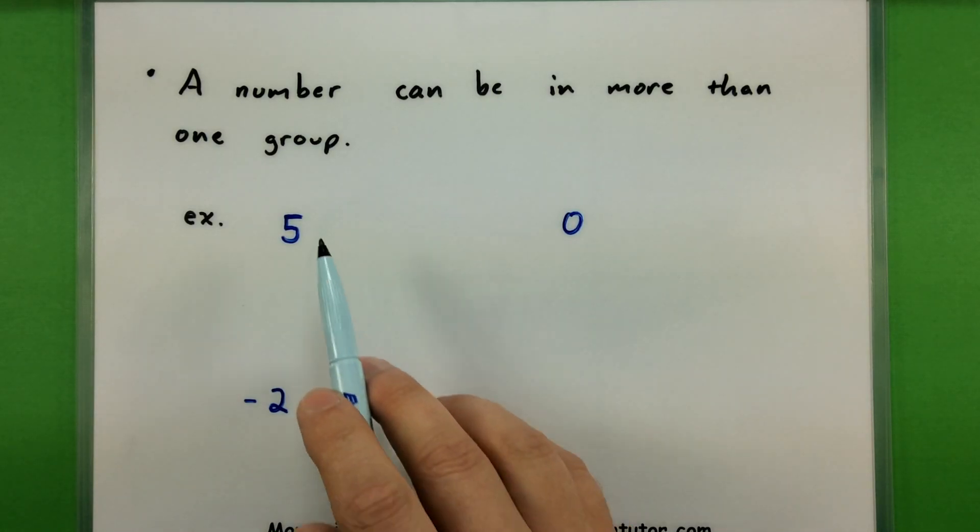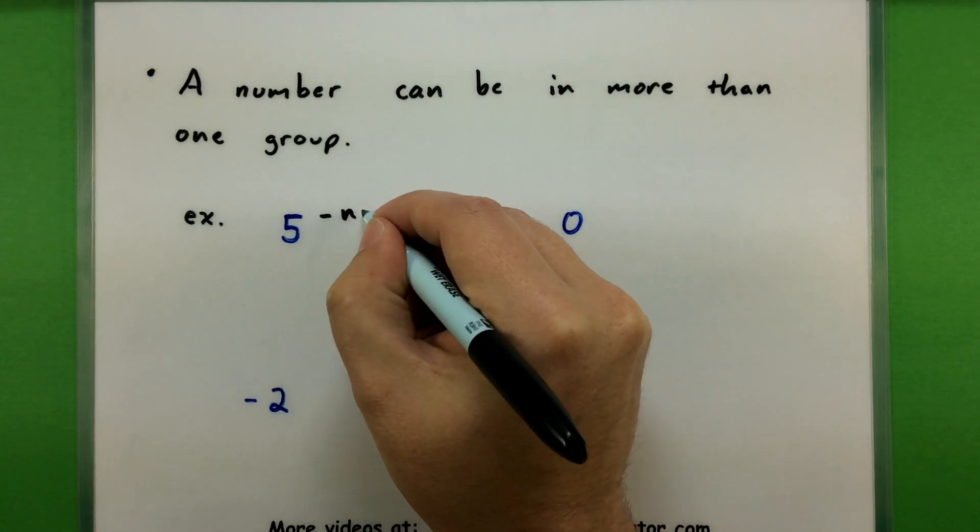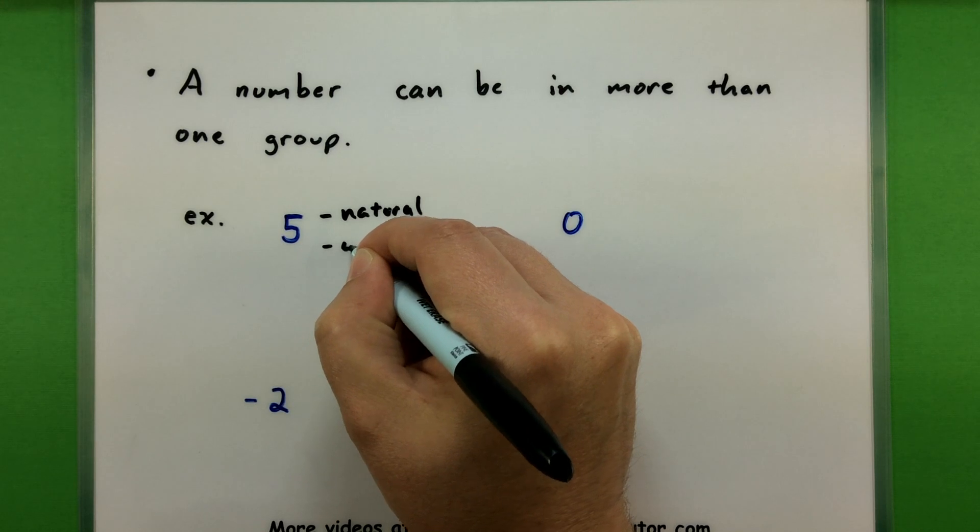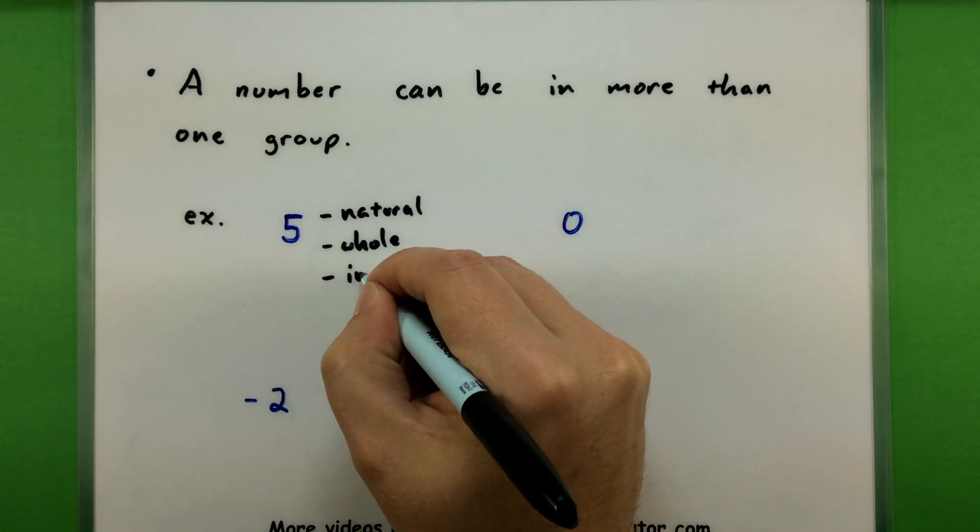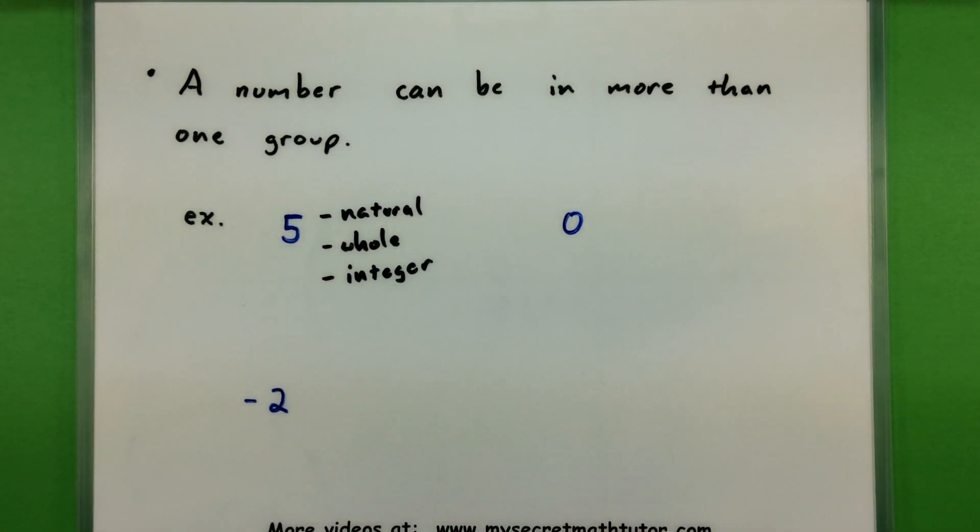So for example, let's take the number 5 here. We've already seen three different groups and it turns out that 5 is in all of those groups. So you want to know that you can call 5 a type of natural number. You can also call it a whole number. And of course you can call it one of our integers. 5 is in all of those categories.